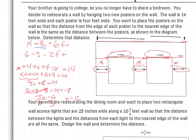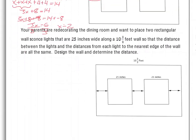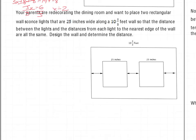Now let's look at the next one. We have a similar situation. Your parents are redecorating the dining room. They want to place rectangular wall sconce lights — just rectangular wall lights — that are 25 inches wide along a 2 and 2/3 foot wall. The distance between the lights and the distance from each side is the same. The struggle here is that we have different units, so it's going to be hard to write an equation.